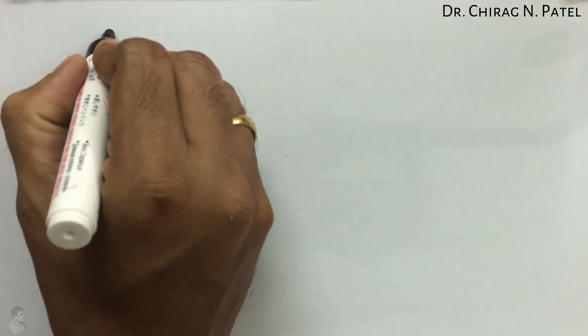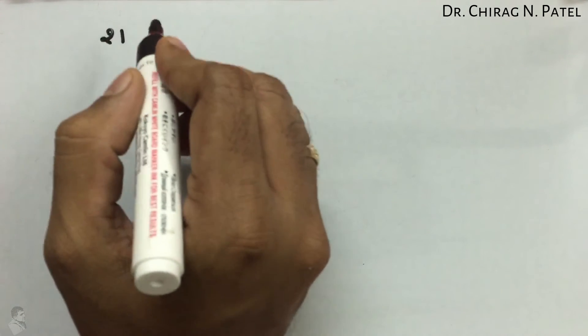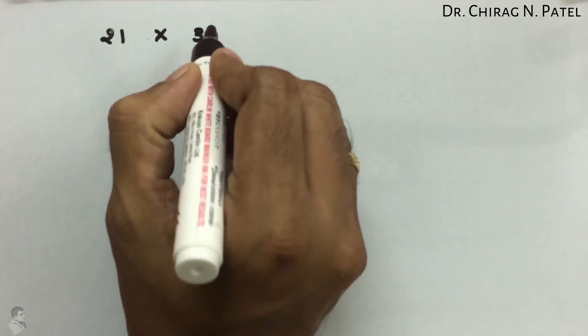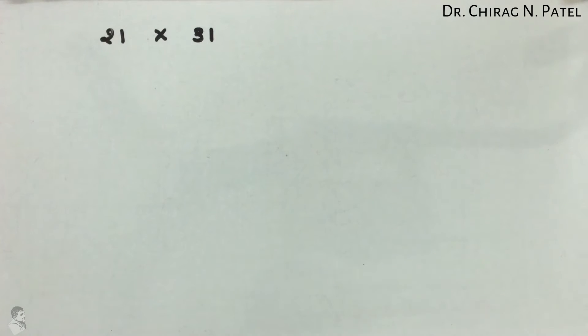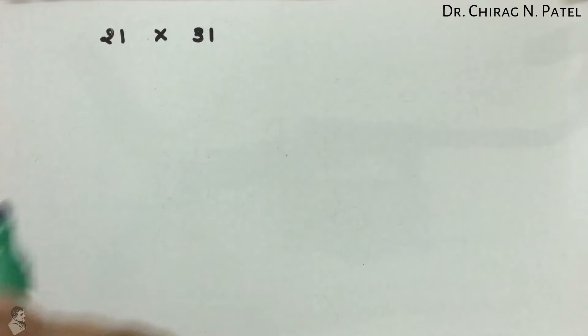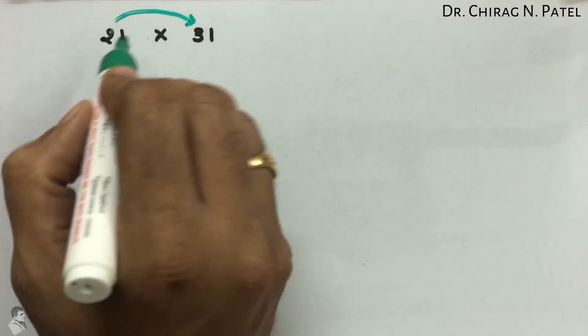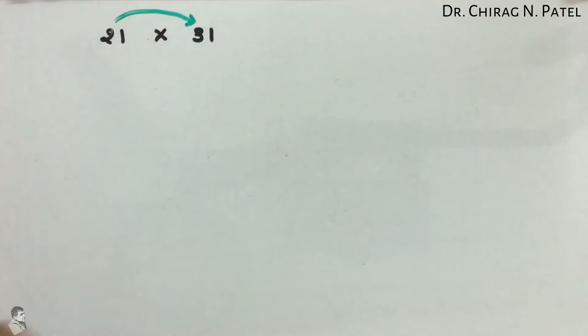How to multiply two-digit numbers up to 100 in a fast way. Here we take two-digit numbers — first one is 21 multiplied by 31 — and find out the answer. First of all, multiply 2 into 3, so the answer would be 6.